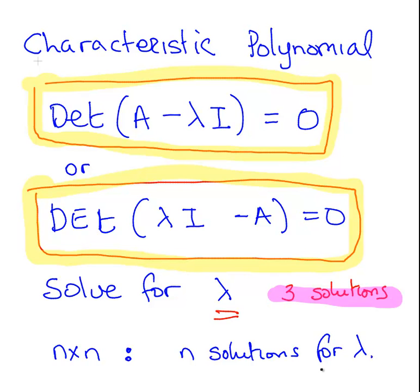Now lambda again is related to the eigenvectors and eigenvalues, but we're not going to worry about that just yet. We're going to just concentrate on the characteristic polynomial.